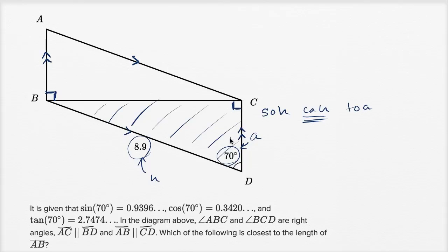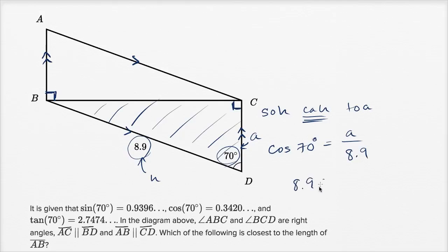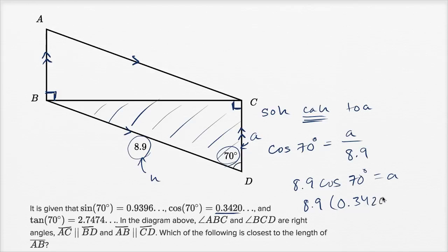If any of this looks completely foreign to you, I encourage you to watch the basic trigonometry videos on Khan Academy. We know that the cosine of 70 degrees would be equal to the length of the adjacent side over the length of the hypotenuse — over 8.9. Or, if you multiply both sides by 8.9, you have 8.9 times the cosine of 70 degrees equals the length of this adjacent side. That's going to be approximately equal to a.